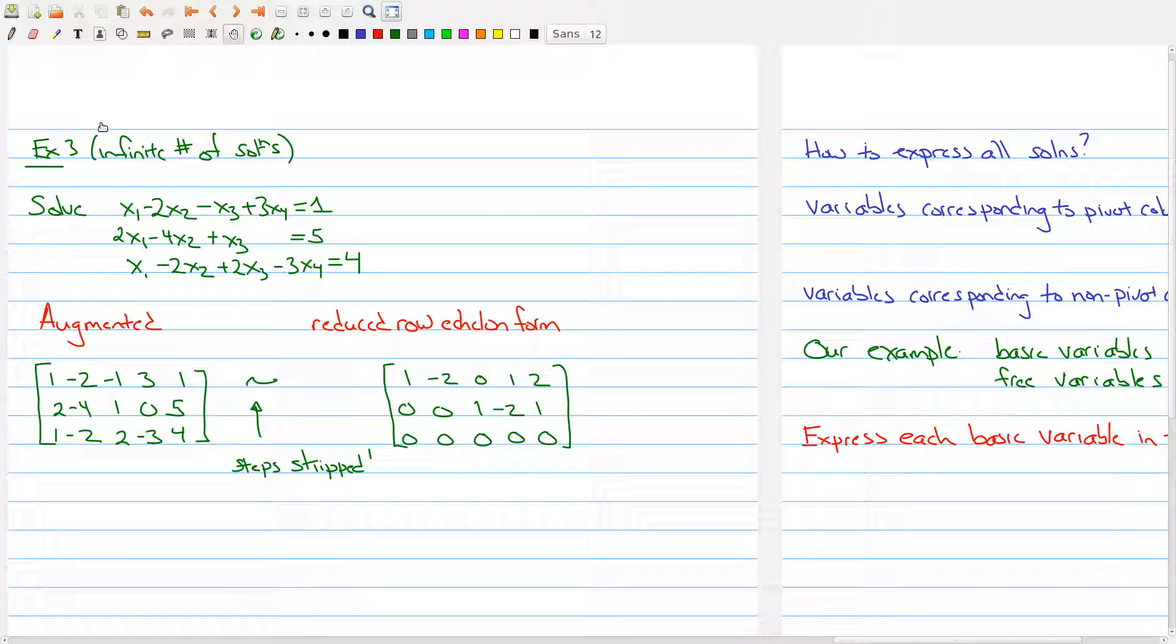We saw in the previous part of this video that we can see whether a system of equations has an infinite number of solutions by looking at the echelon form of its matrix. The problem I left before the break was here is the system of linear equations. I said that it has an infinite number of solutions, and I wanted you to see if you could convince yourself that it would have an infinite number of solutions from the echelon form.